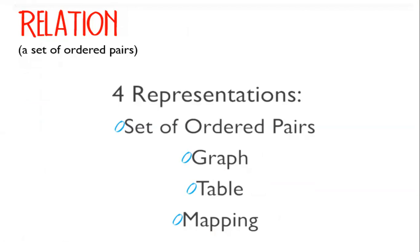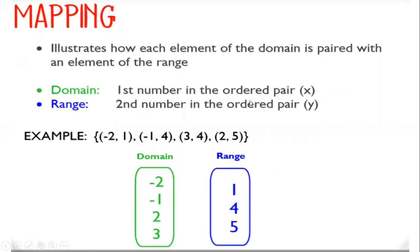We're going to go over really quickly the four representations of a relation. There is set of ordered pairs, the graph, the table, and mapping. We talked briefly about mapping at the end of class because that was the new way we weren't necessarily familiar with. Today I'm going to go over the other three methods and how they all work together.